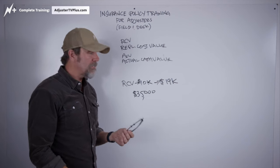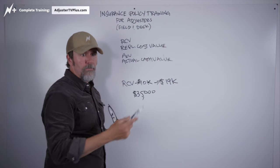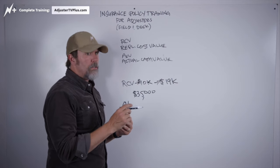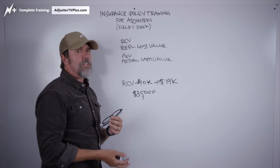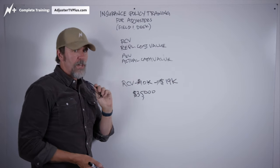From there, that's when we start splitting things up. And we say we're applying a percentage of depreciation. That's how we come up with the actual cash value.